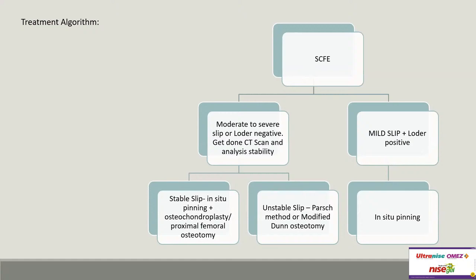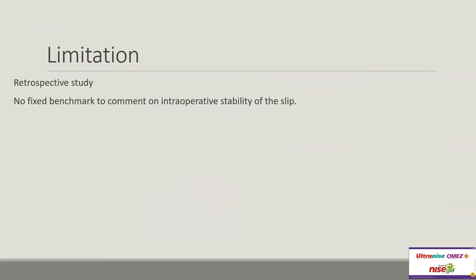Based on this, the authors proposed a treatment algorithm: mild slip with Loder-positive goes to in-situ pinning. For moderate-to-severe slip or Loder-negative, CT scan is obtained to assess stability. A stable slip gets in-situ pinning plus chondroplasty, or a proximal femoral osteotomy such as the Parsch method or modified Dunn approach. The main limitation is the retrospective design and the absence of a fixed intraoperative benchmark for physeal stability.